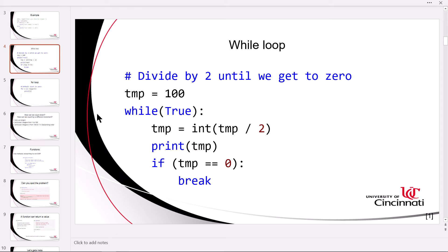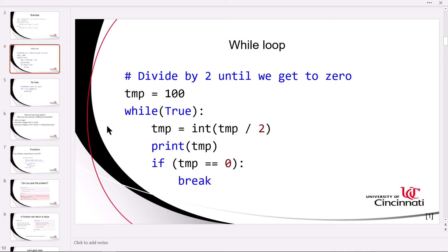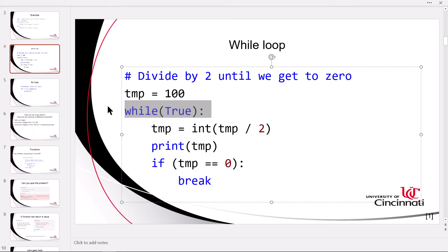Another control flow structure is a loop. We can implement a while loop easily — again creating a block using the colon operator, and indenting all lines in that block. This example starts with the value 100 stored in a variable, which drops into a loop. This while expression will run forever until you manually break out or turn the machine off. Inside the loop it repeatedly divides that variable by 2 until it gets to 0, and then it breaks out.